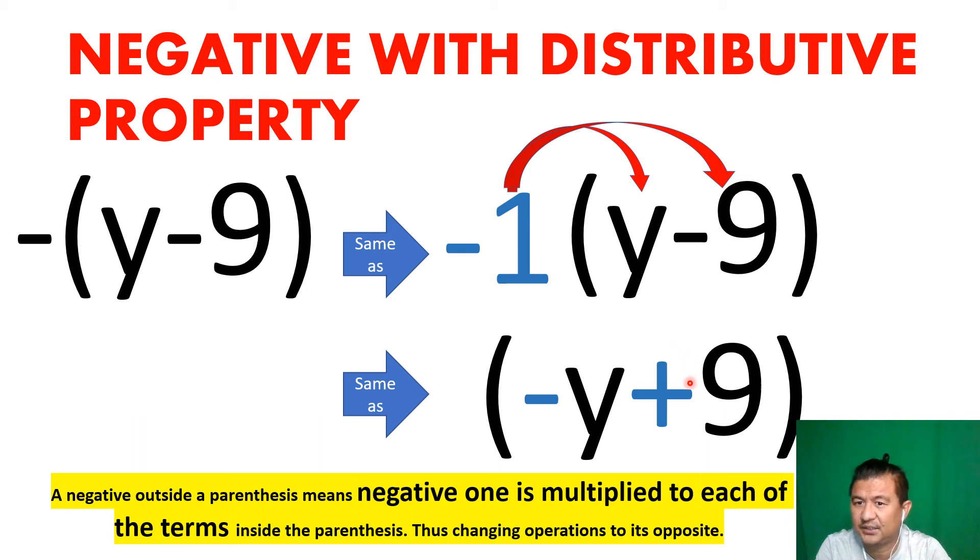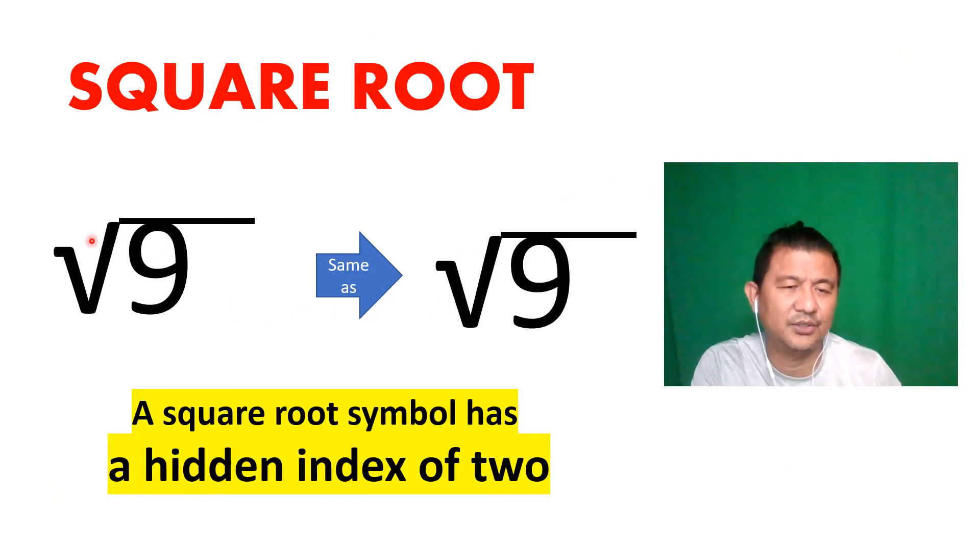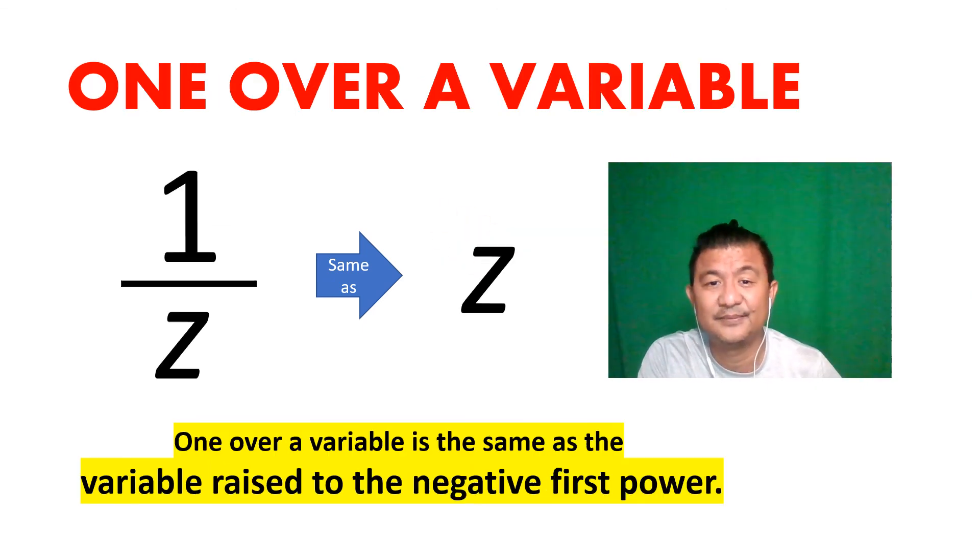Square root: we always see that square root sign, but did you know there's a hidden number there? Yes, that is the index of two, you call it index.